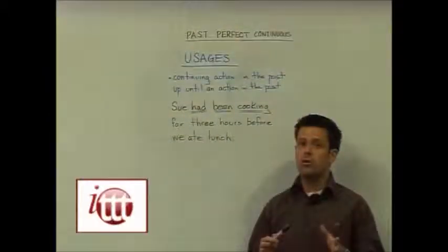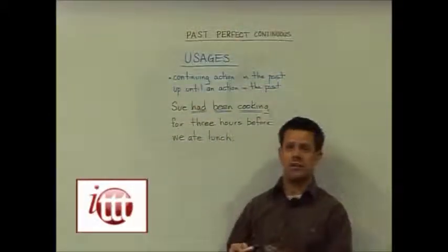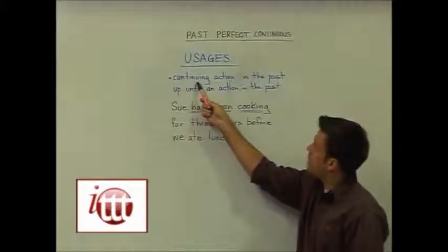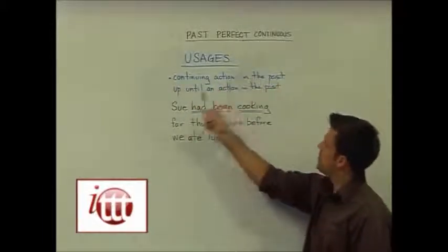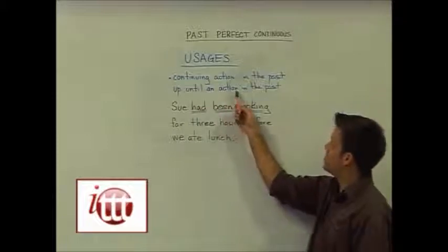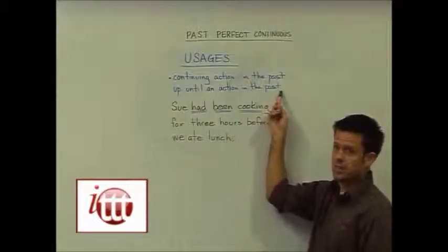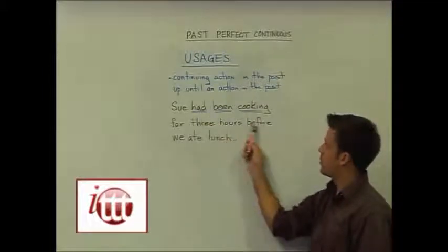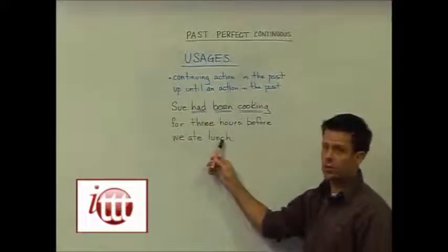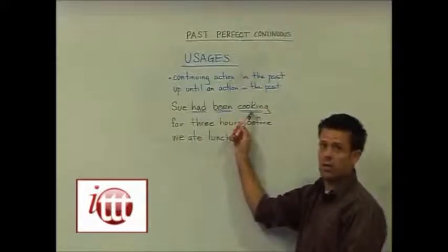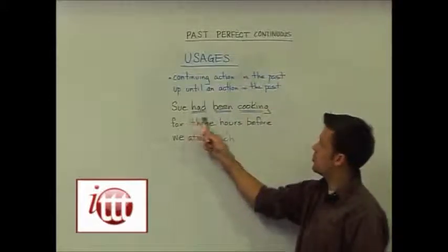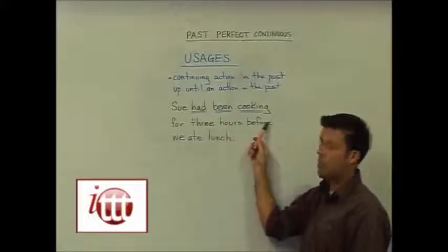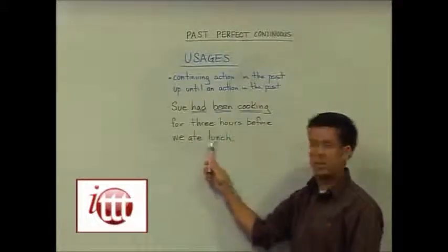The usage for the past perfect continuous tense is to communicate a continuing action in the past up until an additional action in the past. For example: 'Sue had been cooking for three hours before we ate lunch.' The action that had been occurring up until that point was the cooking, and 'we ate lunch' is the other past action.